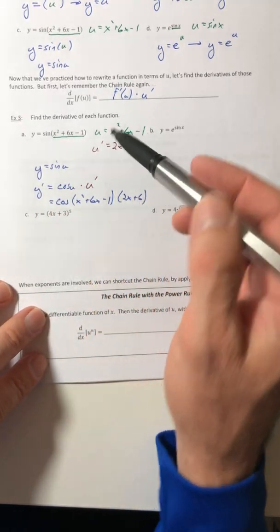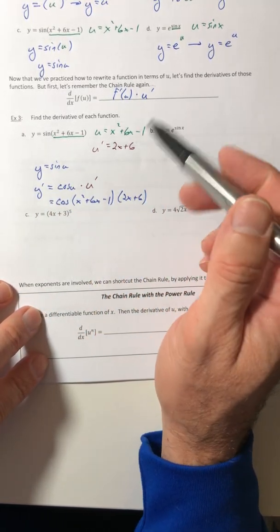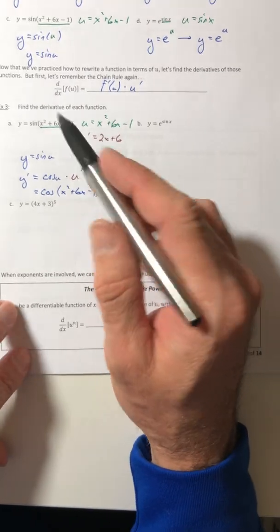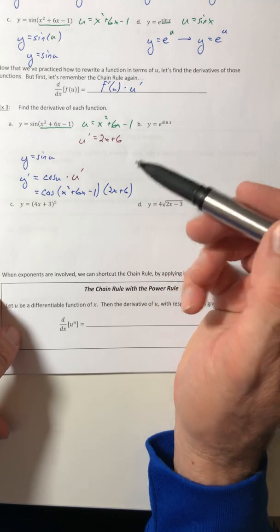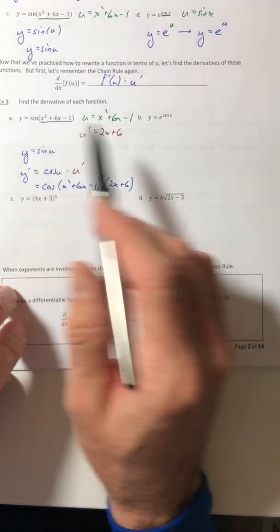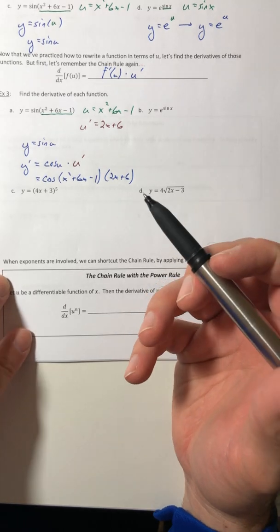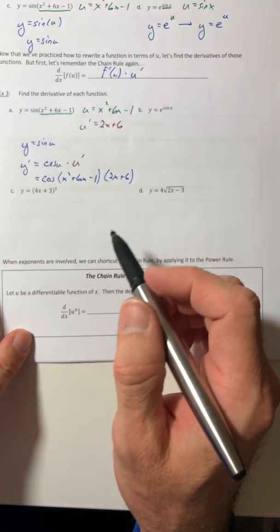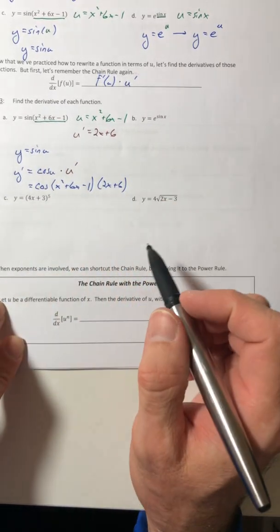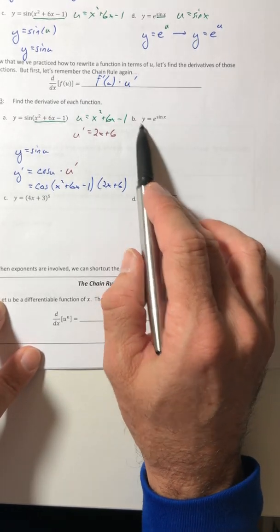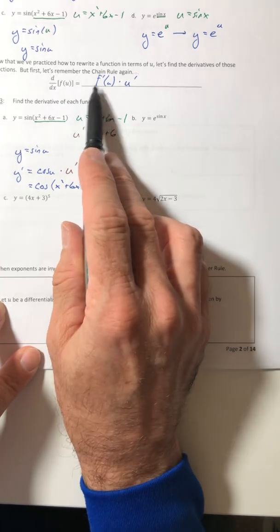So eventually, you're probably going to be able to do a lot of this stuff in your head. You're going to find your own shortcuts and whatnot. You're going to find out what works best for you. I don't talk about a lot of shortcuts because everybody's different. So you're going to have to kind of figure those out on your own. I'll talk about a couple. But for now, it's just a matter of getting the function in the terms of u and then following this.